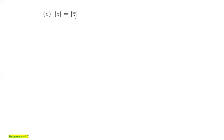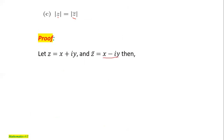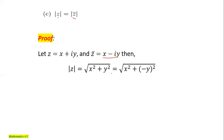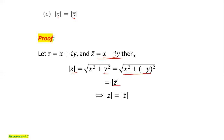For part c, we show |z| = |z̄|. Given z = x + iy, its conjugate is z̄ = x - iy. The norm of z is √(x² + y²). This can also be written as √(x² + (-y)²), since (-y)² = y². Therefore this expression is identical to the norm of z̄, which means the norm of a complex number and its conjugate are equal.